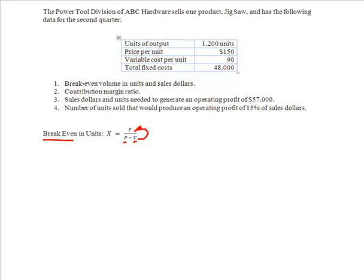I'm going to solve to determine where my profit is at zero. When I do that math, substituting everything in, I find out that if I make 800 units, I will be producing enough of these jigsaws to cover $48,000 in fixed costs.